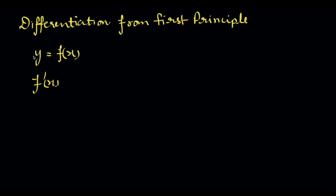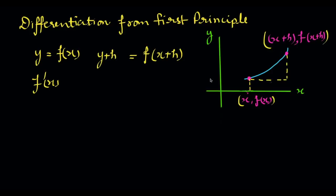If we increase or decrease the value of x, the value of y will also increase or decrease. If we increase the value of x by h, the value of y will also be increased by h. We can understand this with the help of a graph. This is point x and f(x), and if we increase the value of x by h, then this point will be x plus h — let it be B, and this is Q.